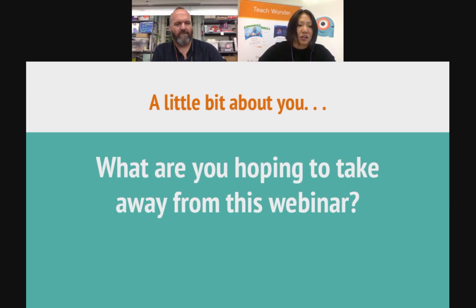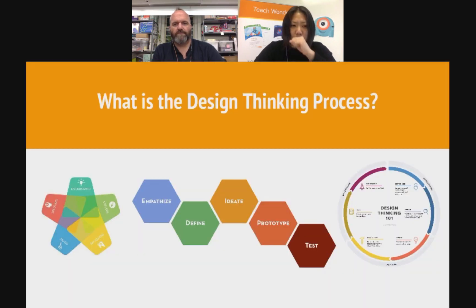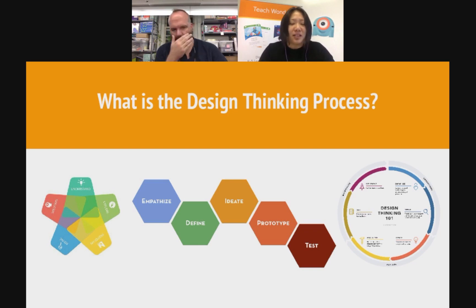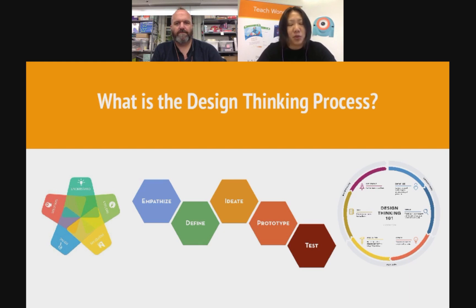Before we start, I want to get a sense of who knows what the design thinking process is. If you could define it in one sentence — I've included some images of graphics people have used to talk about it. What is the design thinking process to you? We're hearing: new ideas for positive outcomes, iterative design, instructional design, build-share-reflect, backwards design, and a fluid five-step process with strong collaboration.